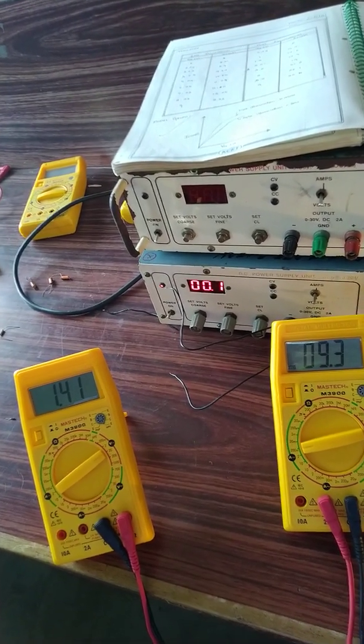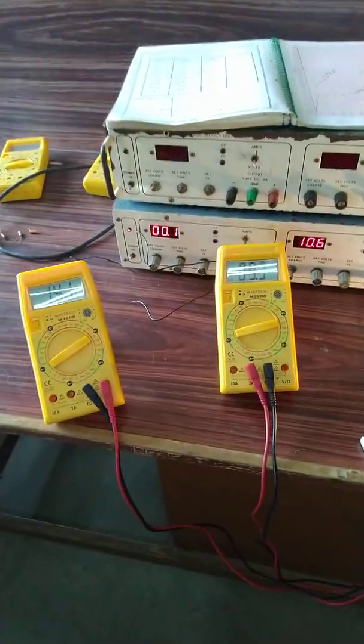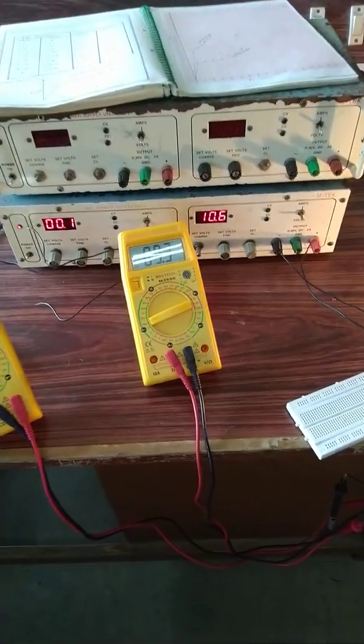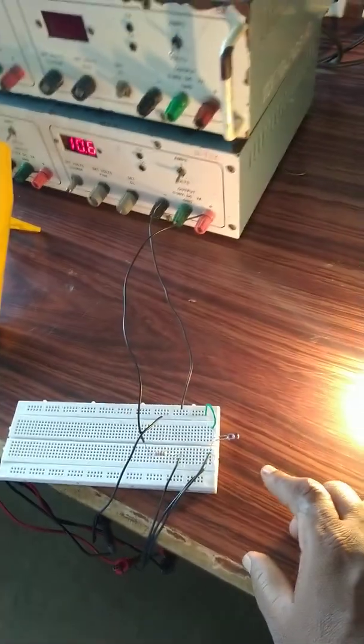10.6, 1.41, 9.3. So this is the tabulated value for the another illumination. That is, this is less illumination because the lamp is distance away from the photodiode. This is a photodiode.